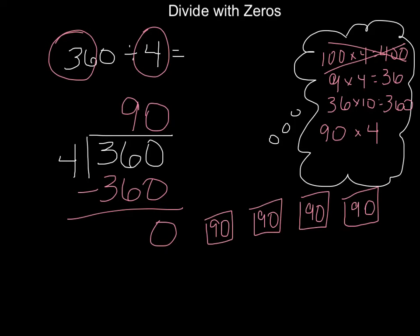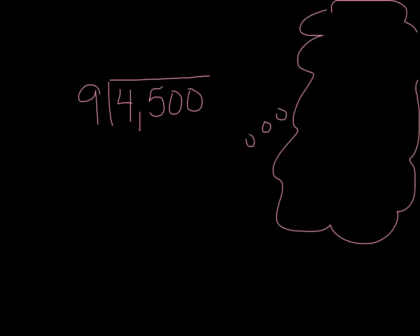Now let's take a dividend that's a little bit bigger. I have 4,500 — pickles, peanuts, or anything — and I want to divide it into 9 equal groups. Part of my brain is saying: I see a 9, I see a 45. I want to keep in mind that I know a math fact — 9 groups of 5, or 5 groups of 9, gets me 45.